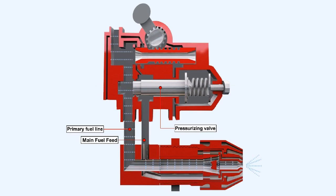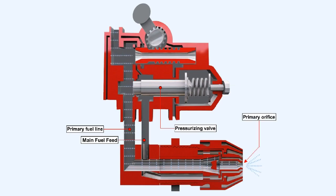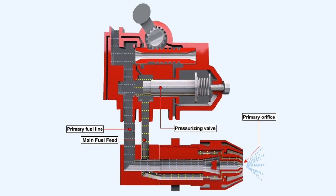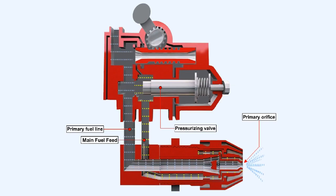The duplex system, and shown here the duplex spray nozzle, effectively use an orifice of variable size. At low fuel pressures, a pressurizing valve closes off the main fuel feed to the nozzle, the only supply coming from the primary fuel line. The primary fuel line feeds the primary orifice, a relatively small hole, which is capable of providing a finely atomized spray at lower fuel pressures. When the engine accelerates during start, fuel pressure builds until the pressurizing valve starts to open. This allows fuel to flow through the main orifice, where it will supplement the spray of fuel from the primary orifice.